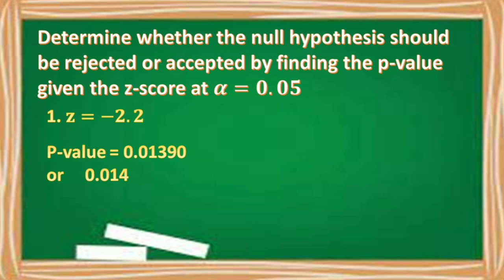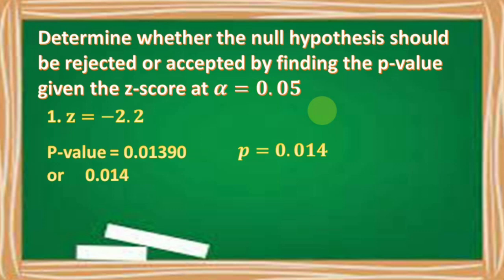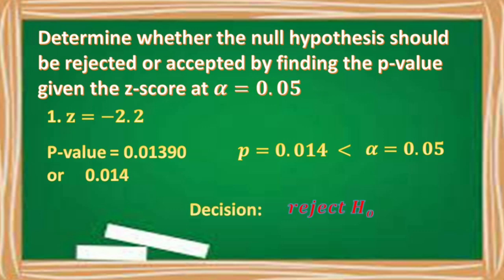The intersection of negative 2.2 and 0 is 0.01390, so the p-value is equal to 0.0139 or approximately 0.014. Comparing our p-value of 0.014 to our alpha level of 0.05, the p-value is less than the alpha level. Therefore, our decision is to reject the null hypothesis.